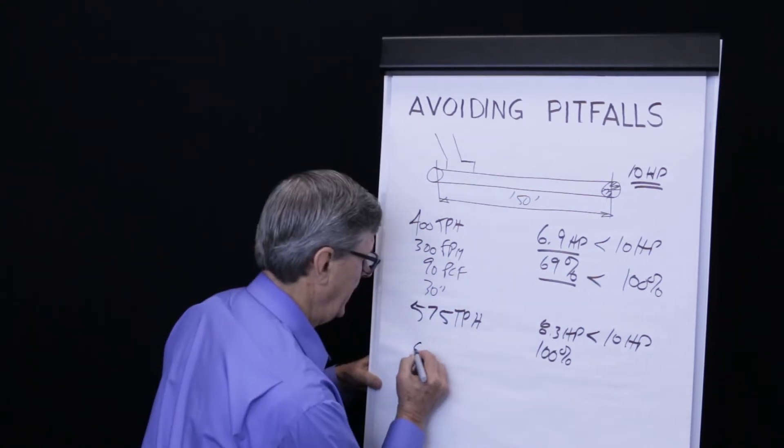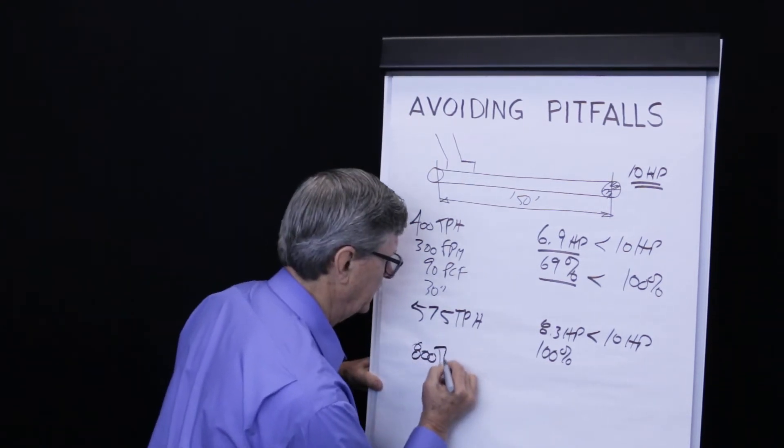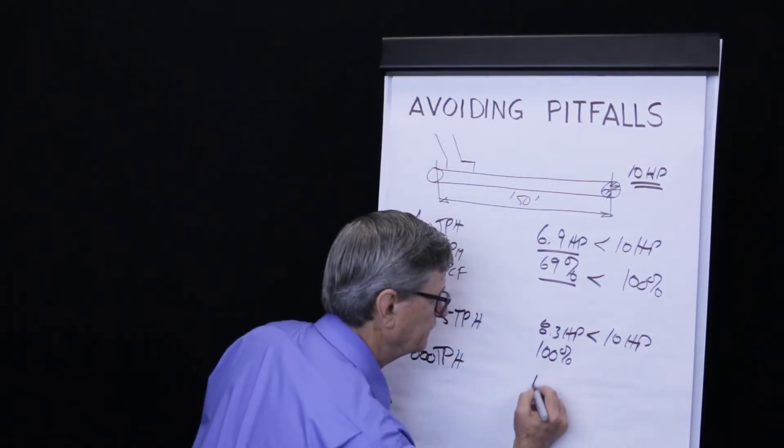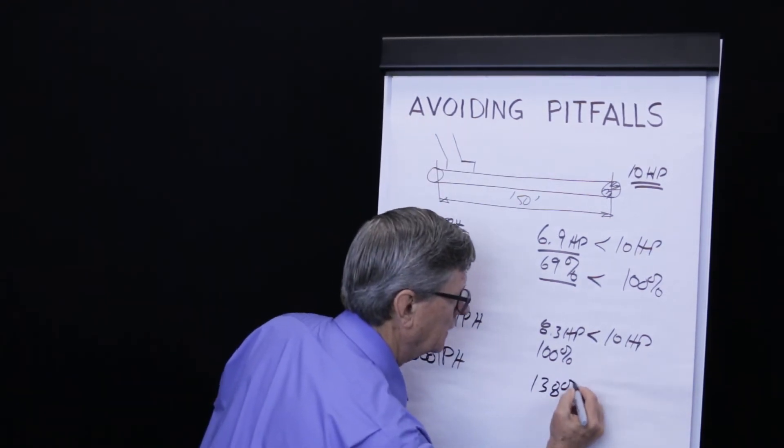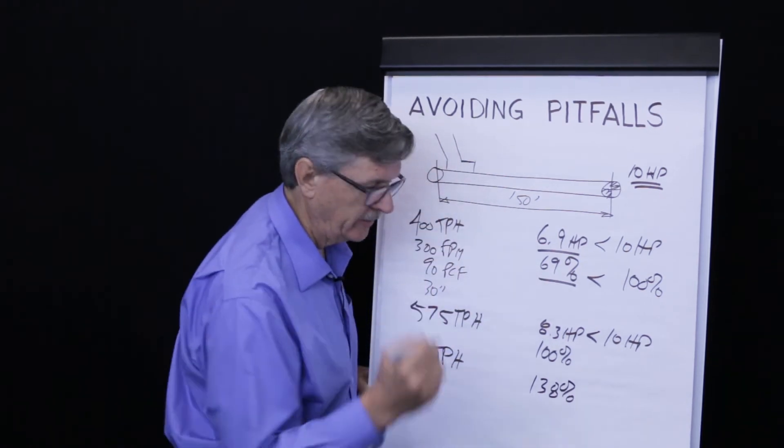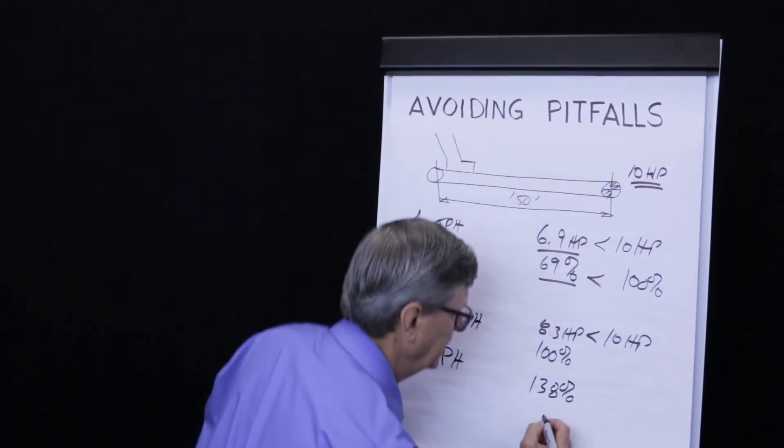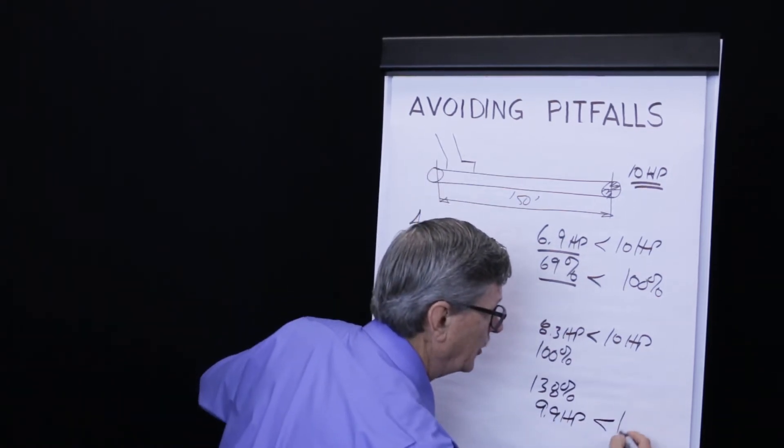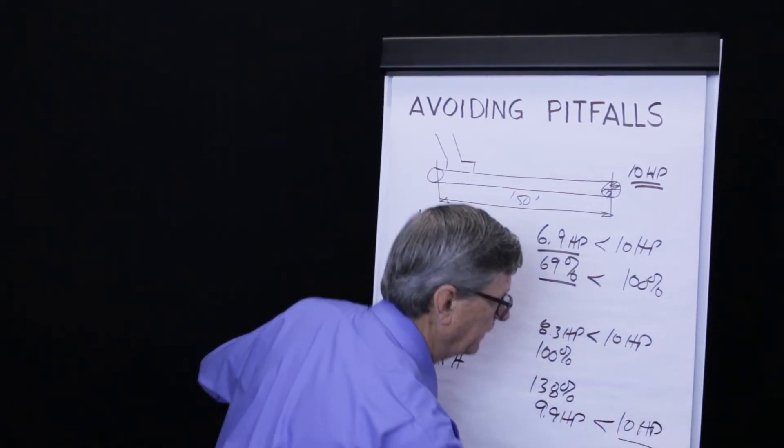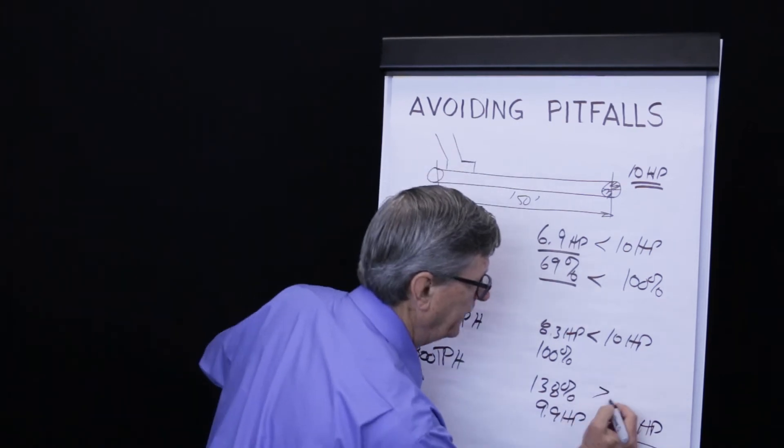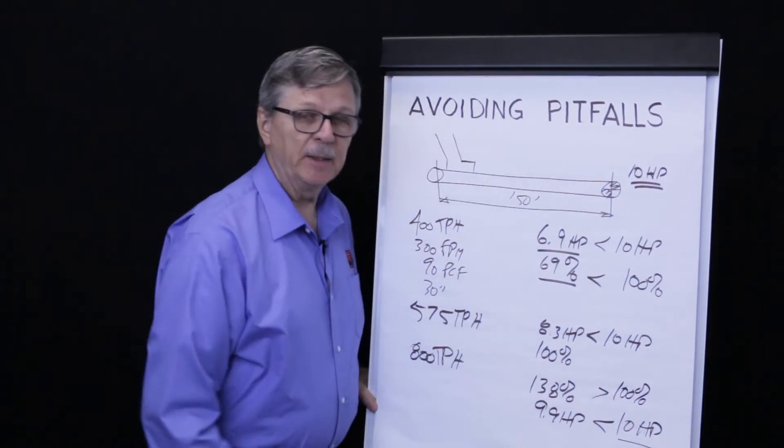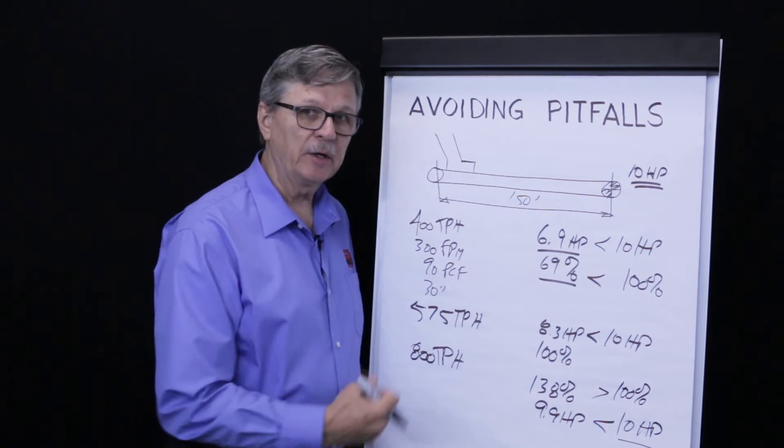We will explore what happens if we try to move 800 tons per hour. In fact, you'll see that at 800 tons per hour, our cross section is 138% of the CEMA recommendation, but the power is 9.9 horsepower. 9.9 is less than 10, so theoretically we could do it, but 138 is larger than 100% and spillage problems would occur in this instance.